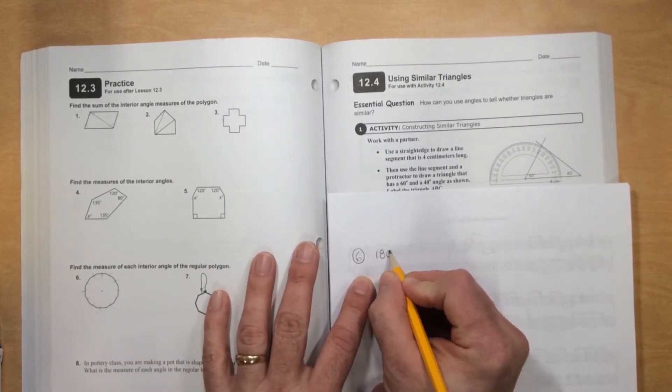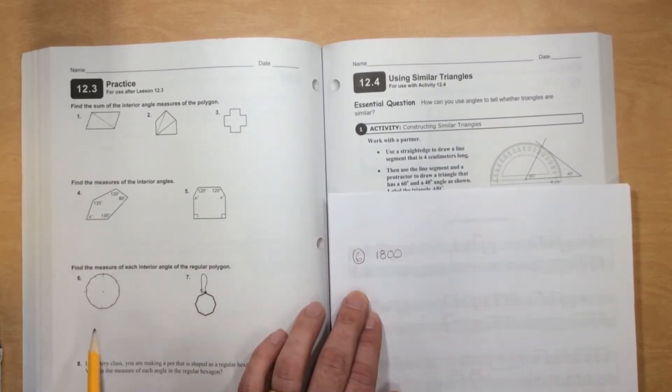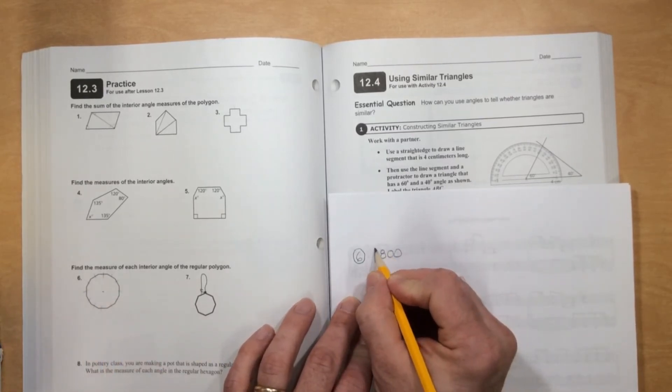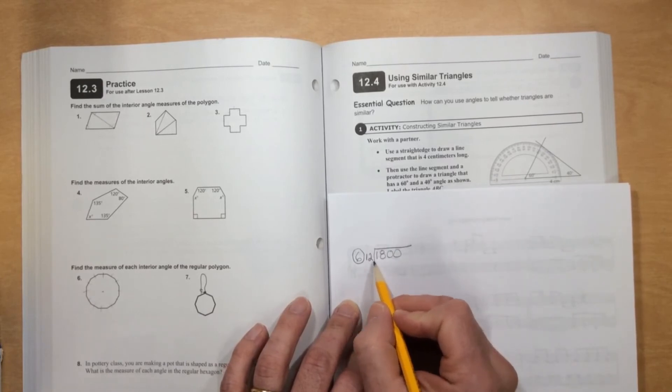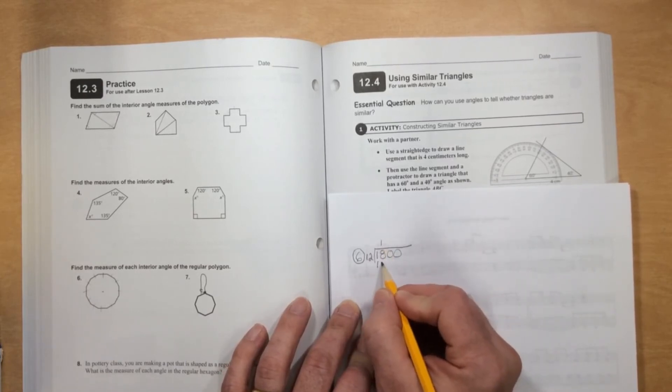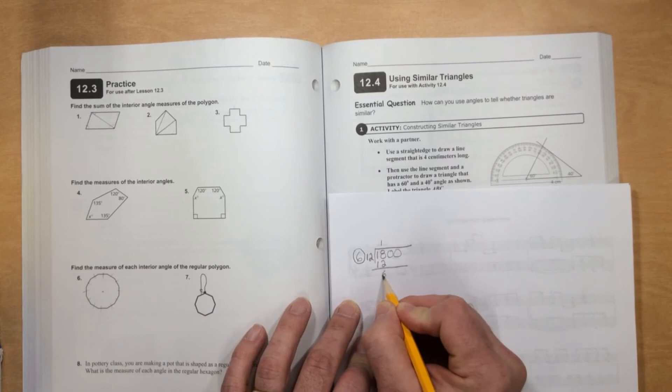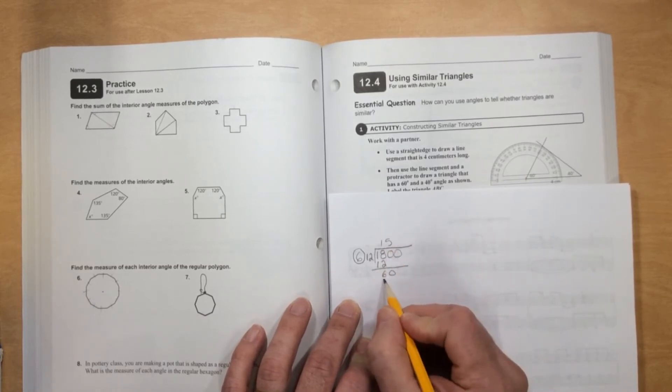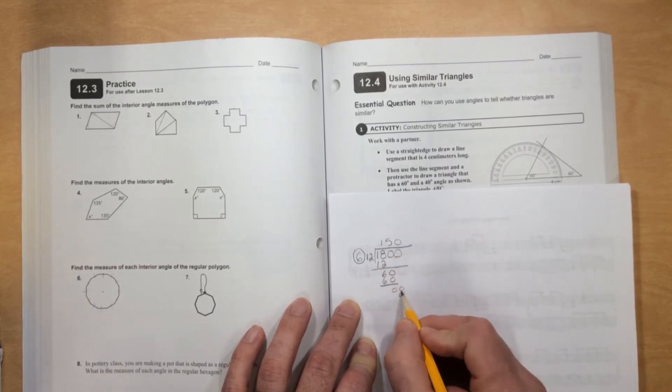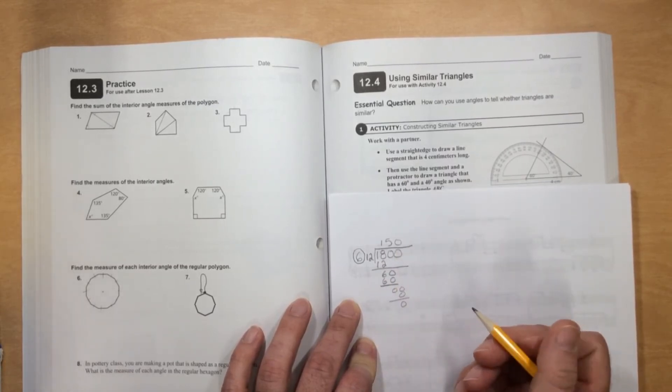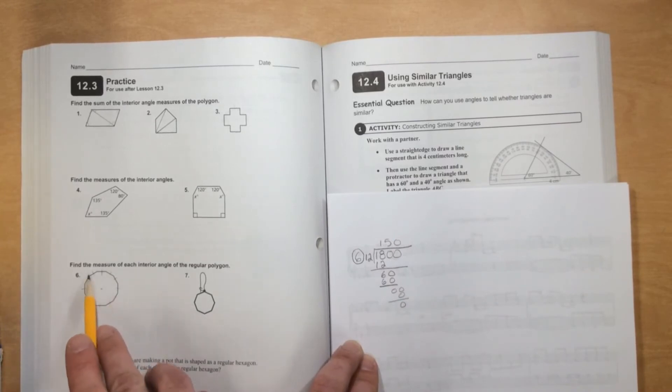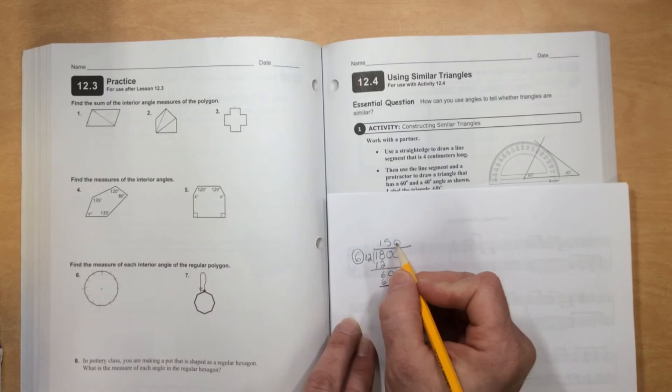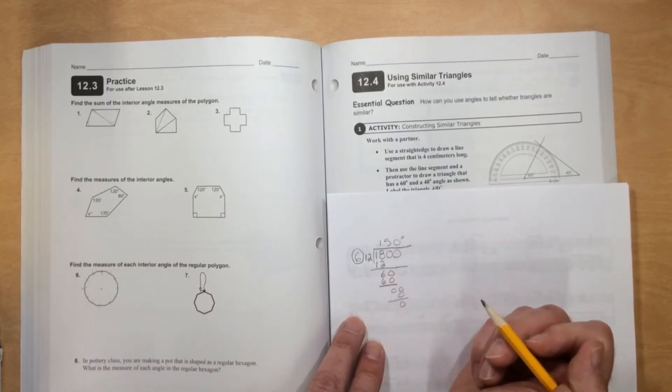We know for number 6 it's 1,800 degrees. And that is for 12 of the sides, so I'll have to divide that by 12. 12 goes into 18 once, 12 goes into 60 five times, 12 goes into 0 zero times. And so each of these has to be 150 degrees. Each interior angle is 150 degrees.